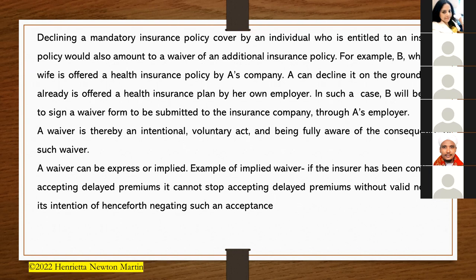Declining a mandatory insurance policy cover by an individual who is entitled to it also amounts to a waiver. For example, if B is A's wife and is offered a health insurance policy by A's company, A can decline it on the ground that B already has a health insurance plan through her own employer. In that case, B would be asked to sign a waiver form to be submitted through A's employer.